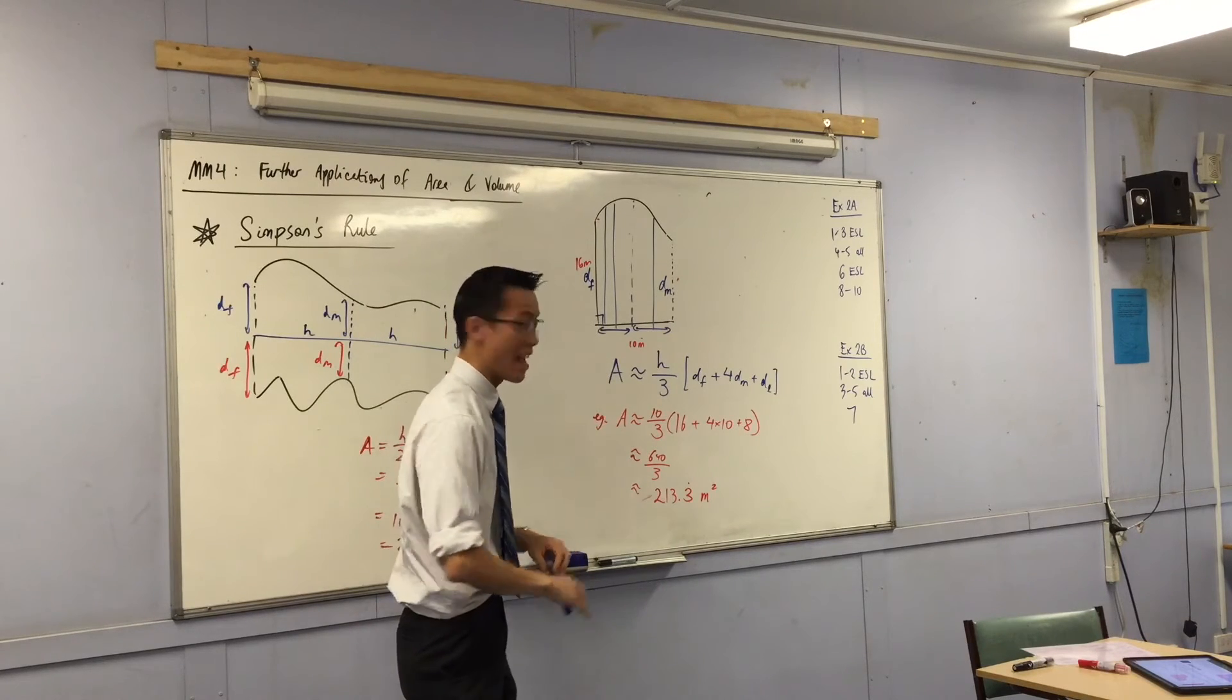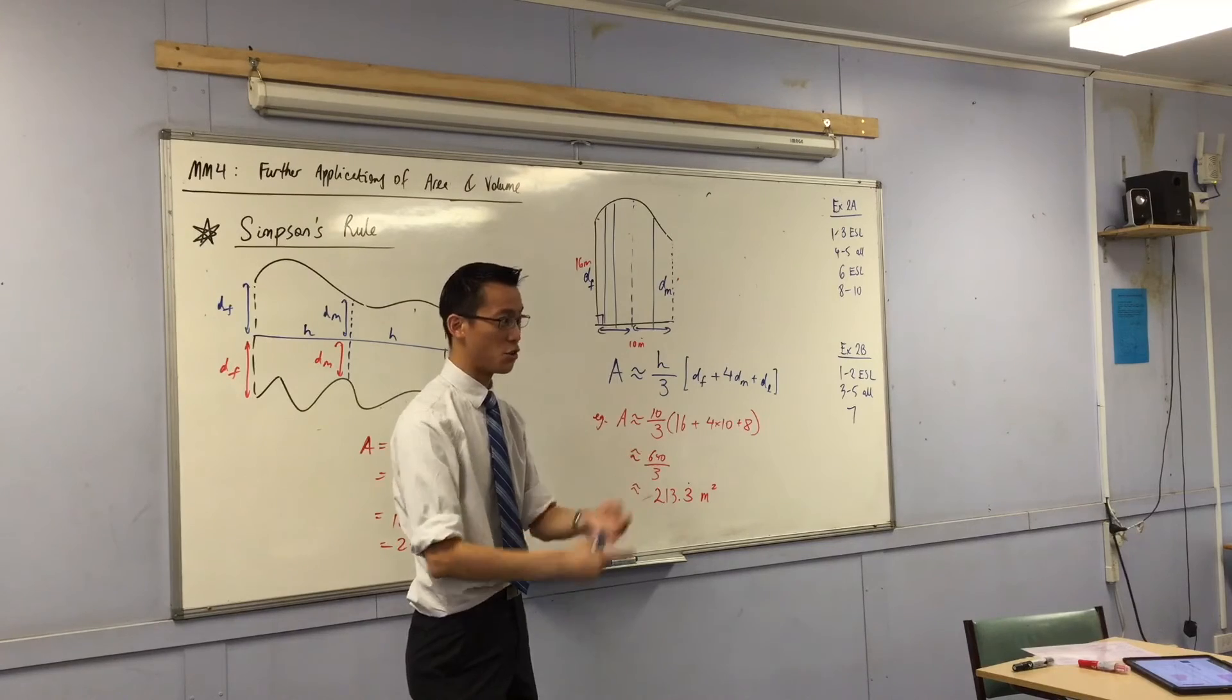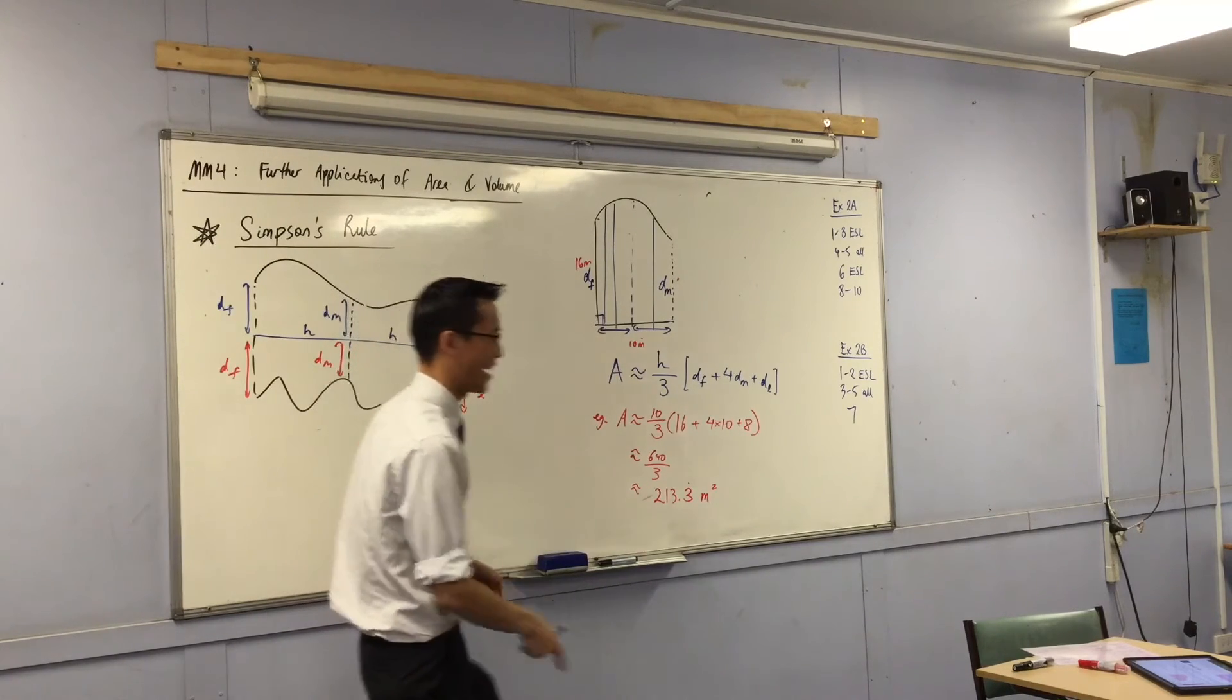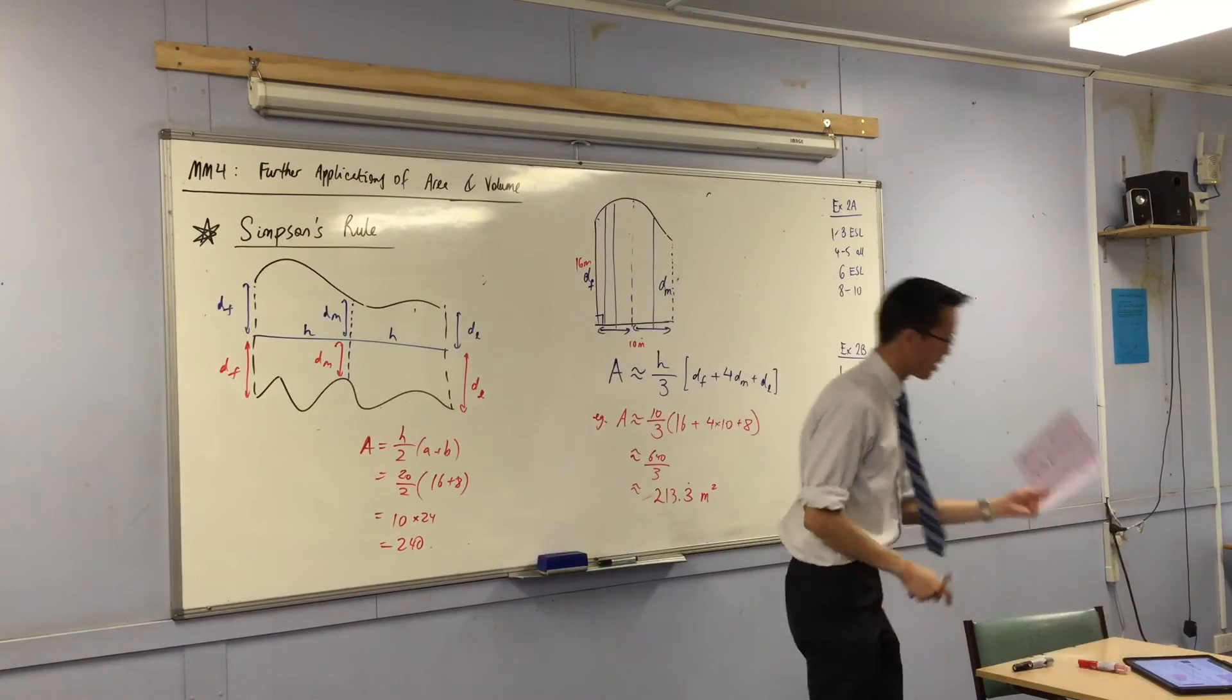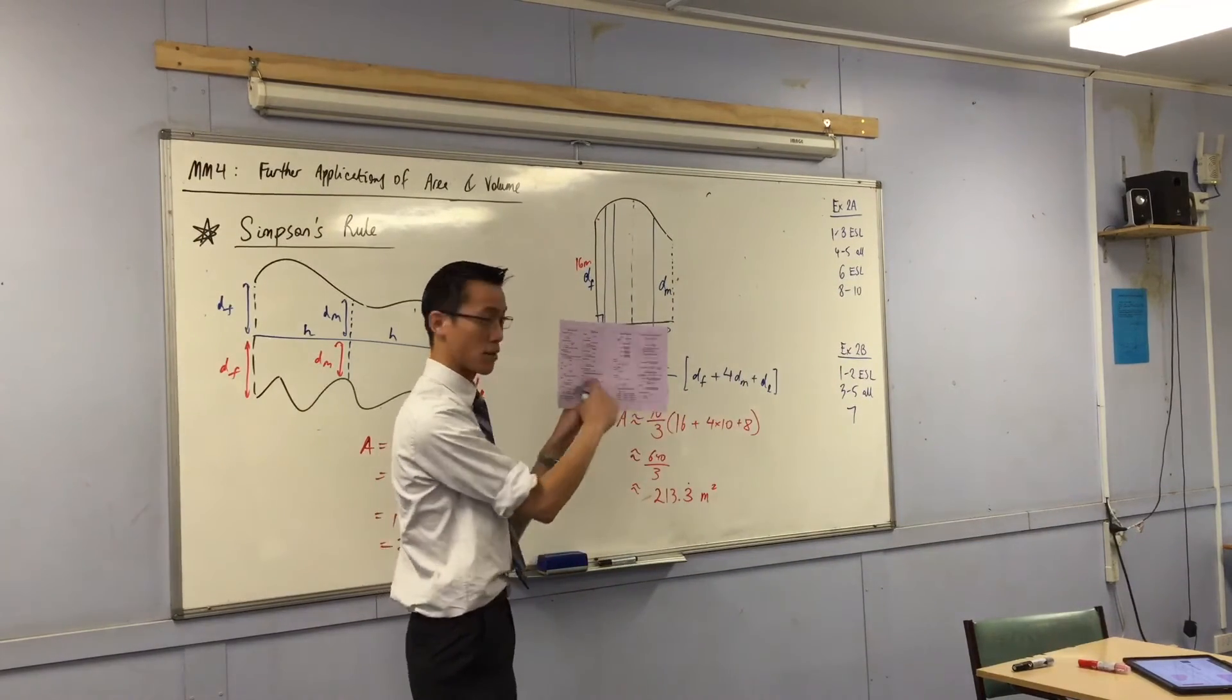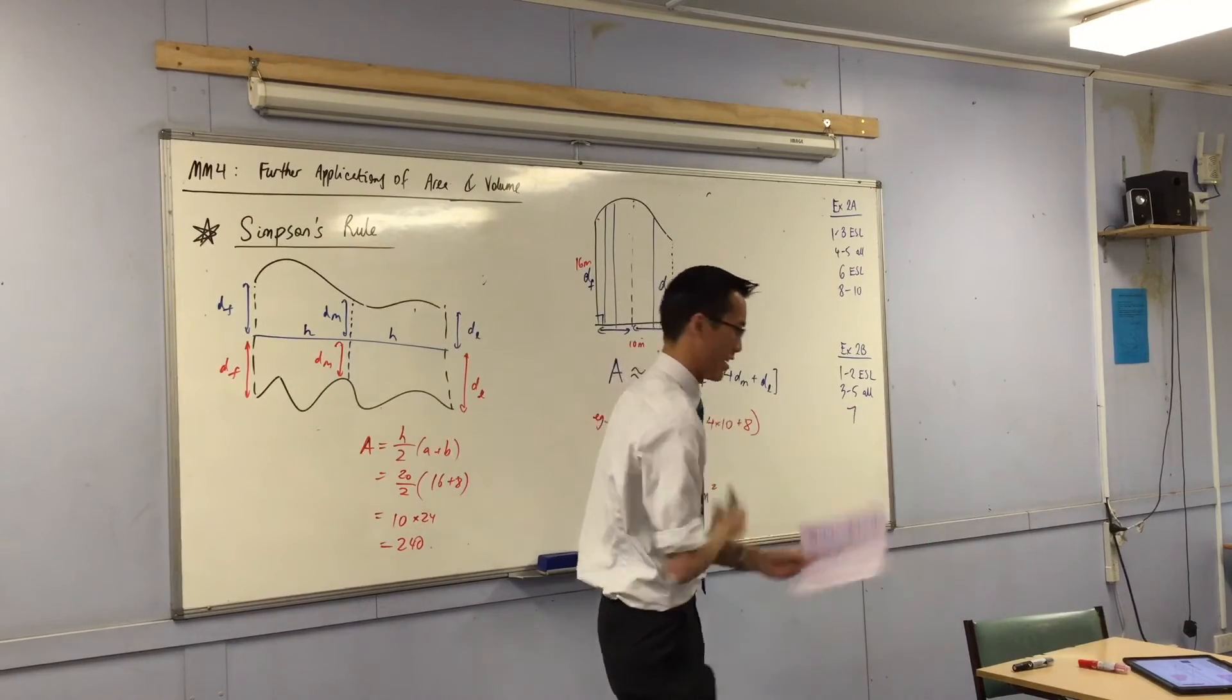Now, the formula is hard to remember. Everyone, I should point out, two-unit and extension one and extension two students, they use this formula too, and they also have trouble memorizing it. Okay? That's one of the reasons why you'll find it on the second page. Approximation using Simpson's rule. The formula is there exactly as I've written it.